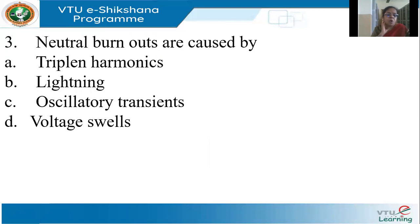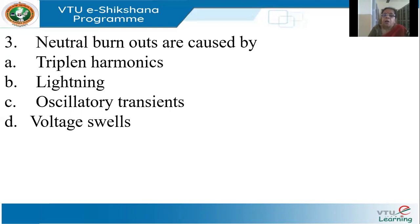Neutral burnouts are caused by triple N harmonics, lightning, oscillatory transients, or voltage swell. A conductor burns out when the current flowing through it is heavy. The zero sequence current flows through the neutral. Normally, unbalance causes zero sequence currents. But the harmonics also have a sequence — all the triple N harmonics are of zero sequence. Therefore, the triple N harmonics will flow through the neutral, and hence neutral burnouts are caused by triple N harmonics.